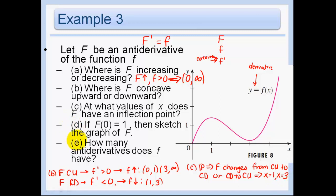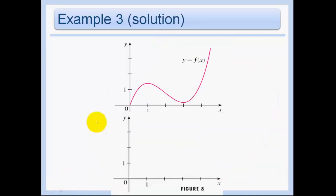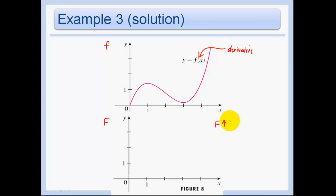In part D, we sketch the graph of F given F of 0 equals 1. Here's the derivative graph. The derivative is positive the entire time, so F is increasing over the entire interval. We have inflection points at 1 and at 3. F of 0 equals 1 gives us our starting point. The slope began around 0 and increased to about 1 at x equals 1.